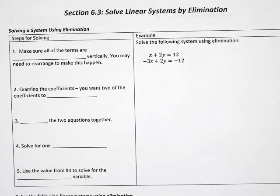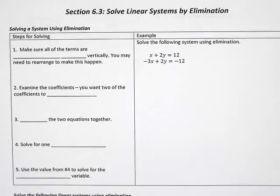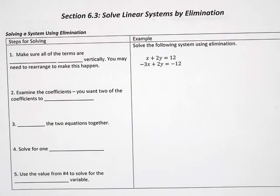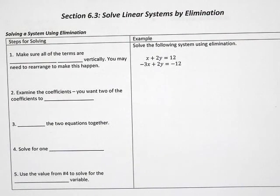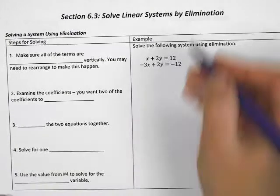We've already talked about two different methods we can use to solve systems of equations. The first method was using a graph and finding where the lines intersected. The second method was using substitution and plugging something in instead of one of the variables. The third method is called elimination.